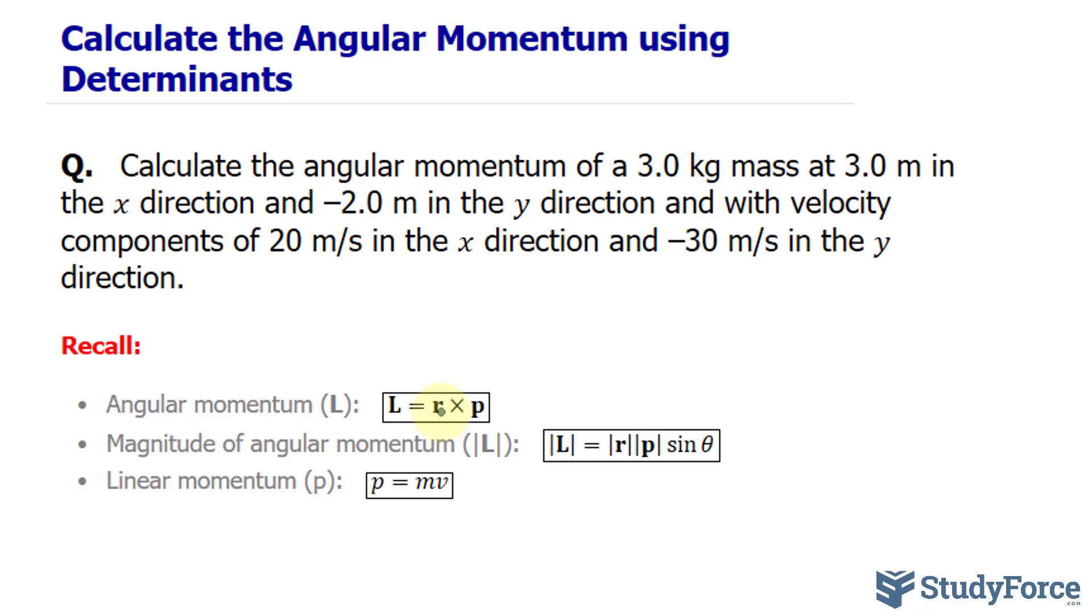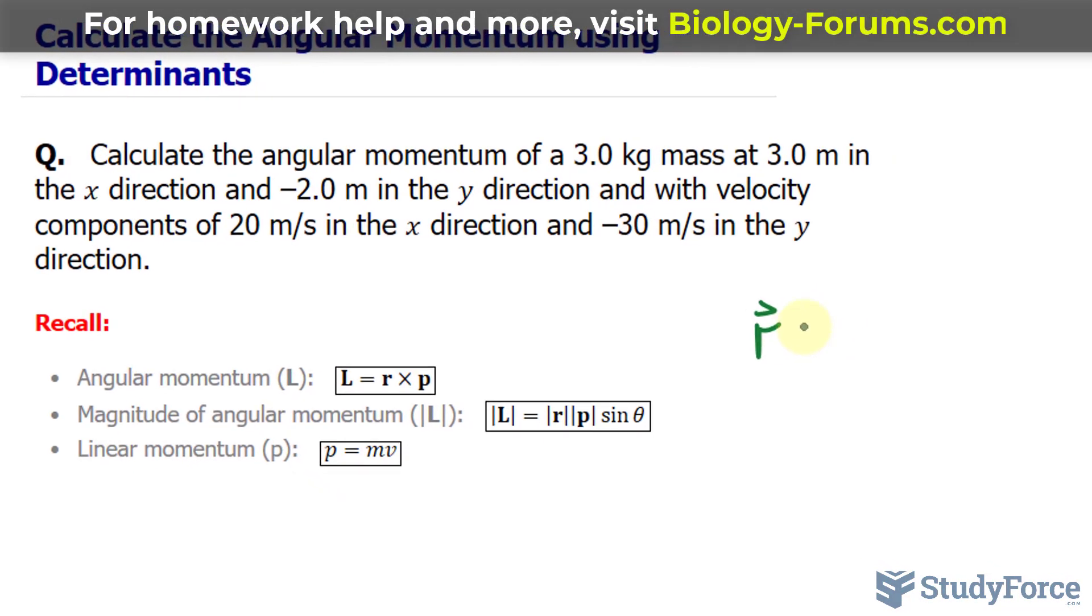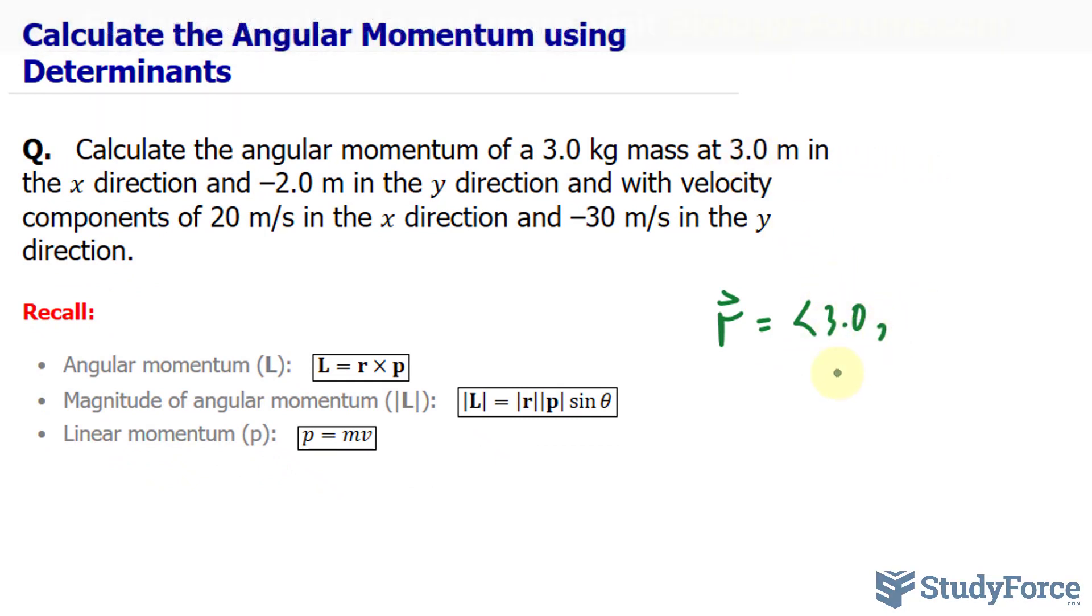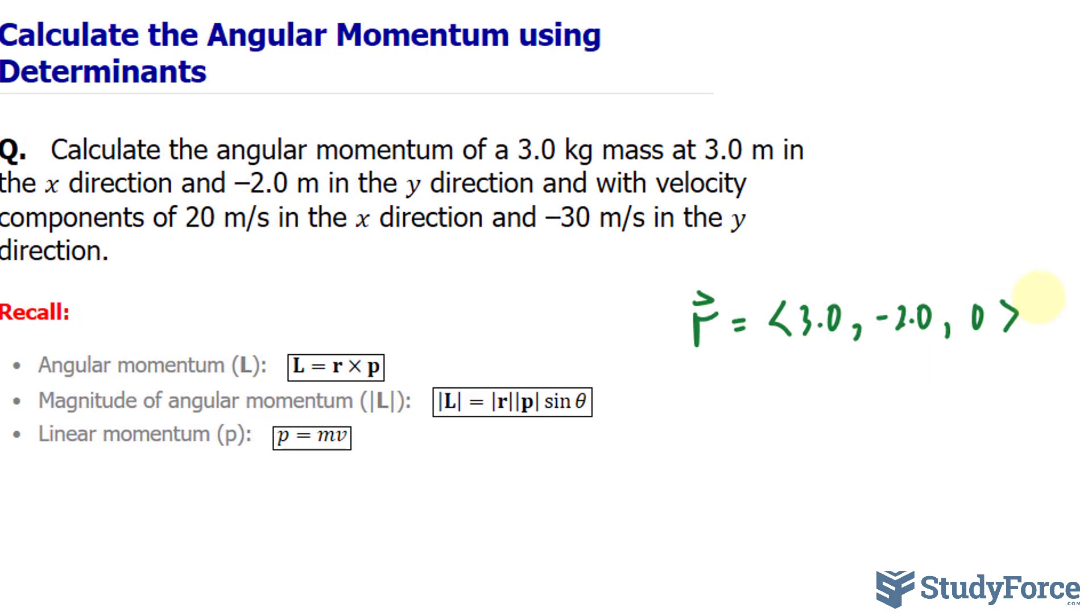We have been given the x and y components of the radius. Specifically, we're told that the angular momentum happens at 3.0 m in the x direction. So the vector r has the x component of 3.0, a y component of negative 2.0, and a z component of 0. The units are in meters.